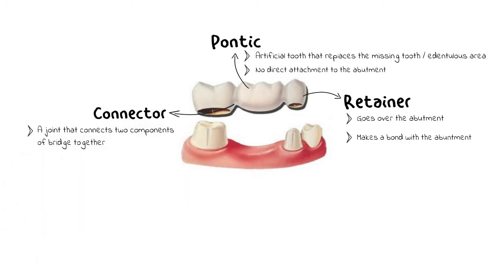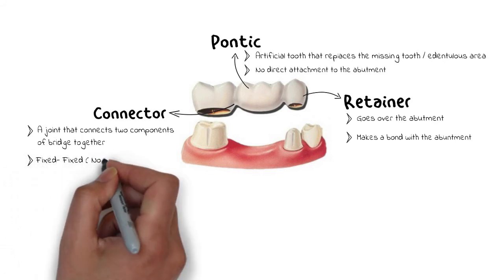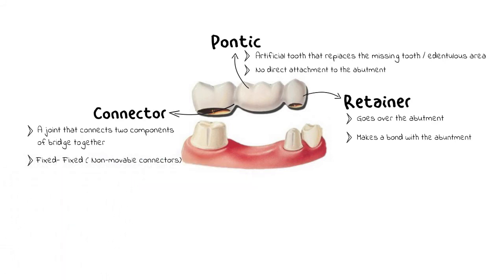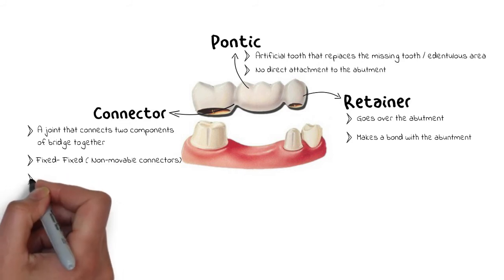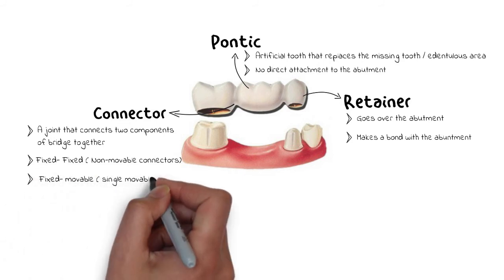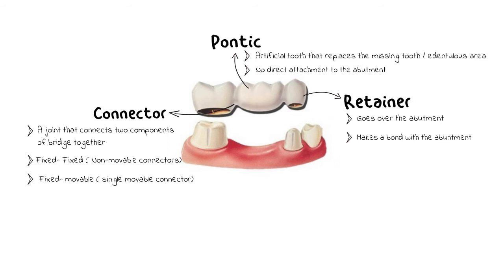Based on the connections, there can be a fixed-fixed type of bridge in which the connectors are totally immovable, or there can also be a fixed-movable type of bridge in which one of the connectors allows some sort of movement. But let's leave the topic of different types of bridges for another lecture.